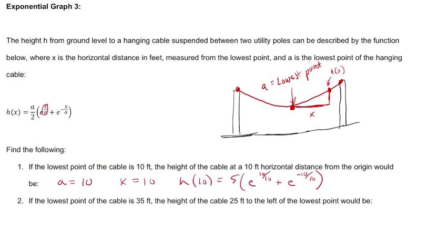Then in the other one, it says the lowest point is 35 feet. So a is 35 feet. The height of the cable 25 feet to the left would be, so x is 25.